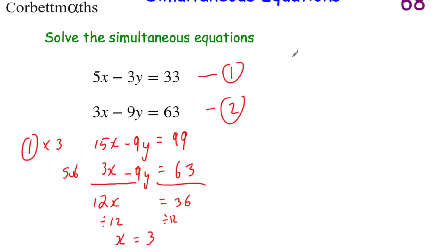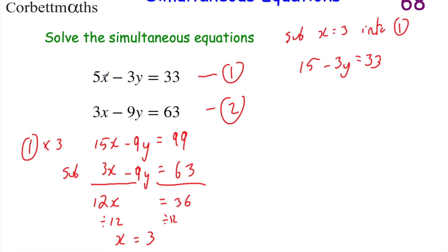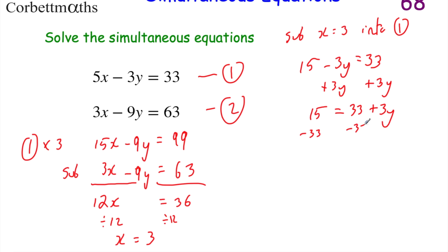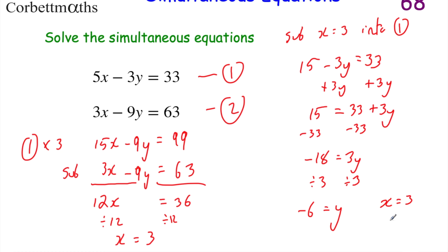Now we're going to substitute x equals 3 into equation 1. So 5 times 3 is 15, subtract 3y equals 33. I'm going to add 3y to both sides so that my 3y's are positive, giving 15 equals 33 plus 3y. Then take away 33 from both sides: 15 minus 33 equals minus 18, so minus 18 equals 3y. Divide by 3 and divide by 3: minus 18 divided by 3 is minus 6, so y equals negative 6. Our solutions are x equals 3 and y equals minus 6.